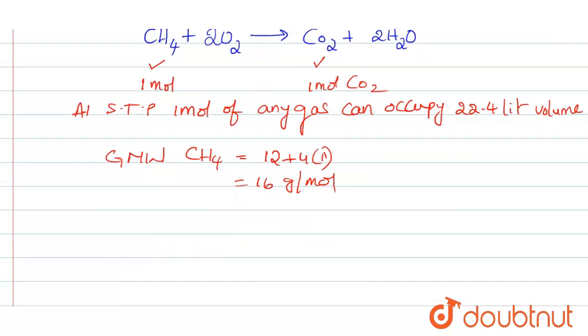That means if you see the relation between CH4 and CO2, 16 grams of methane on combustion gives 22.4 liters of CO2.